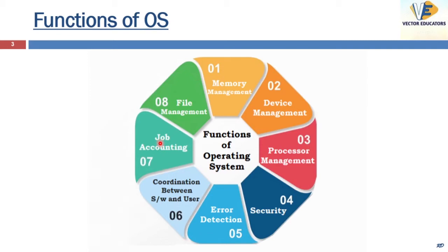Another function is job accounting — it keeps track of jobs and resources used. A job is a unit of work or the task that the processor is doing. Then coming to file management: the file system has directories in which files are stored. The OS keeps track of the location and status of the file system.